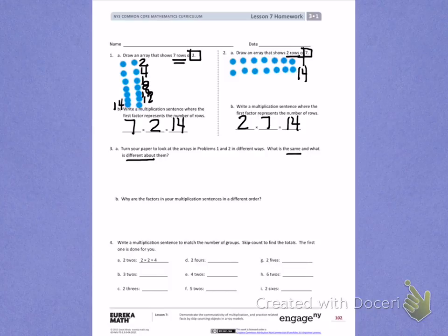Letter B. Why are the factors in your multiplication sentences in a different order? Think about our rule. Rows times size equals total. Use that information to help you explain why the factors are in a different order.